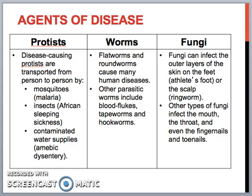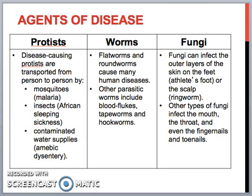Protists — think of little worms, insects, or little animals — transport diseases from person to person. Right now, a main example would be the Zika virus. We've also had malaria passing from mosquitoes, and insects passing on diseases like African sleeping sickness, as well as water contamination. These are all transported by these little worms, animals, and insects.